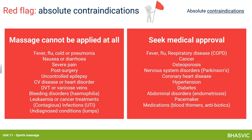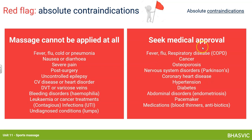The final category is absolute contraindications — definite red flags where you should not treat the client at all. These include temperature, flu, fever, pneumonia, nausea, diarrhea, severe pain, very recent post-surgery, epilepsy, deep vein thrombosis, severe varicose veins, bleeding disorders like haemophilia, cancer, severe infections, and any undiagnosed lumps and bumps. For these, you must seek medical approval and refer the client.